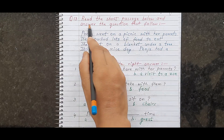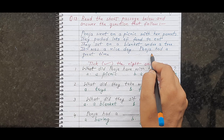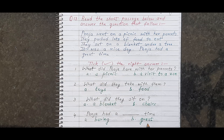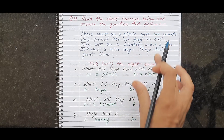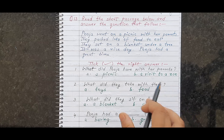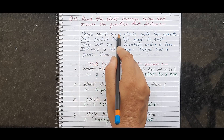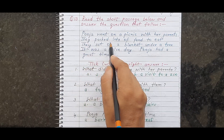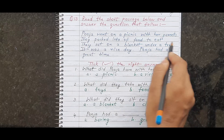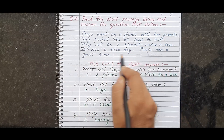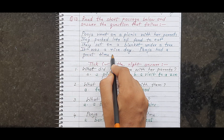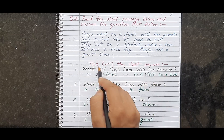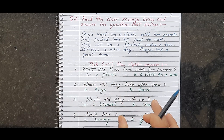Here is the next question: read the short passage below and answer the questions that follow. First, let's see the story. 'Pooja went on a picnic with her parents. They packed a lot of food to eat. They sat on a blanket under a tree. It was a nice day. Pooja had a great time.' After reading the story, the children have to give the correct answers. Each question has two options, and the child has to tick the correct one.